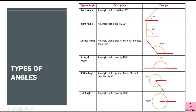At 12 o'clock, when both the needles are on top of each other and when one needle has taken one full round of the clock, it has formed 360 degrees with the other needle. So that is a complete angle.